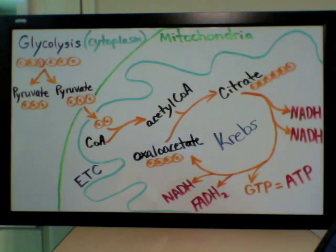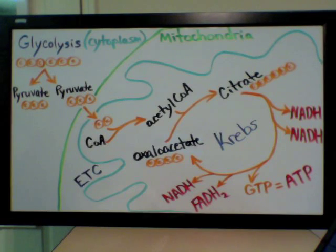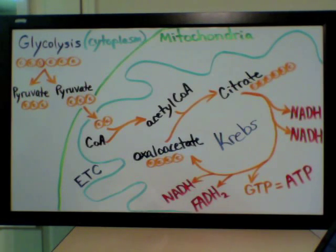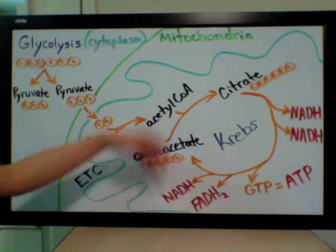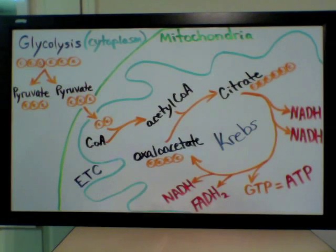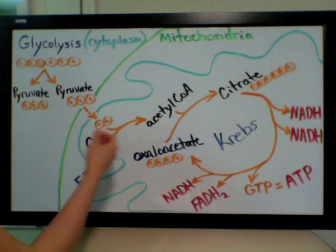To simplify this and avoid getting lost in terminology, there are only a few key terms to focus on because you'll see them again and again, possibly on a test. The first stage of cellular respiration is glycolysis, and it occurs in the cytoplasm of the cell. The second stage is the Krebs cycle, which occurs in the matrix of the mitochondria. The third stage is the electron transport chain, which involves a membrane and embedded proteins.